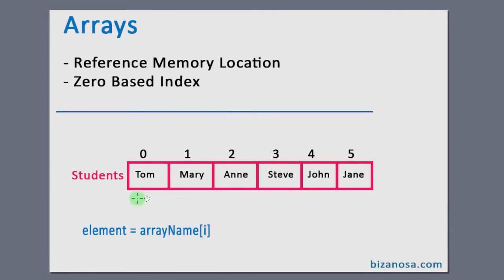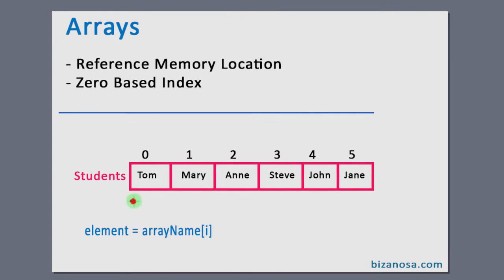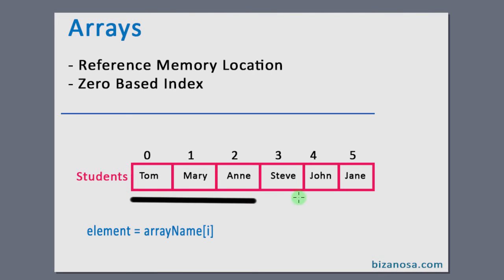So an array has a length. Like in this case we have six items. The total number of items here is one, two, three, four, five, six.